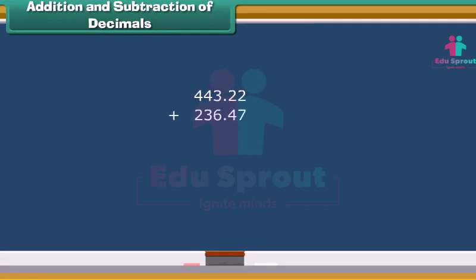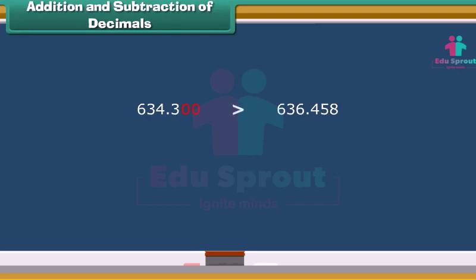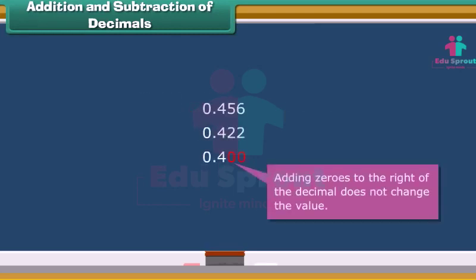Decimals are easier to add or subtract just like whole numbers. For this purpose, you have to line up the decimals first. Also, decimal numbers are easier to compare just by adding zeros at the end of the shorter number to make the numbers the same length, and you can tell right away which number is bigger. Remember, adding zeros to the right of the decimal does not change the value.